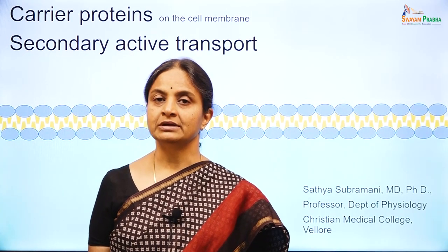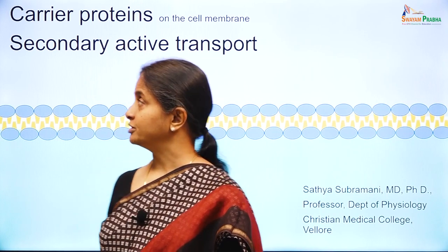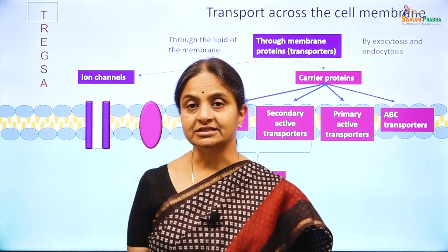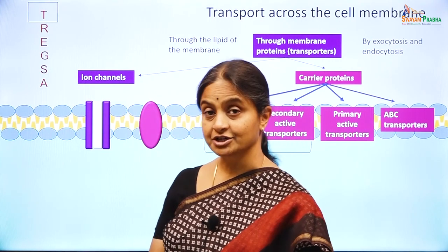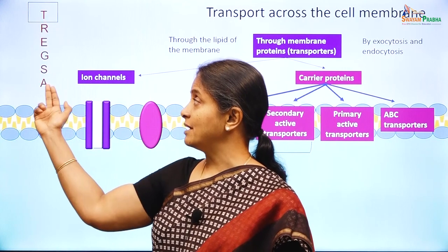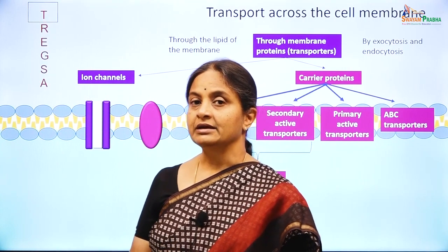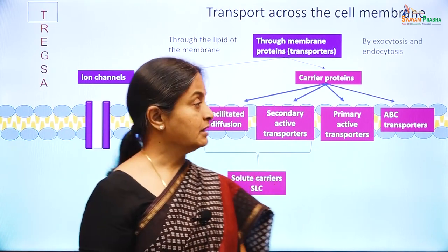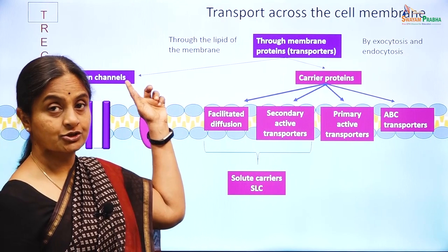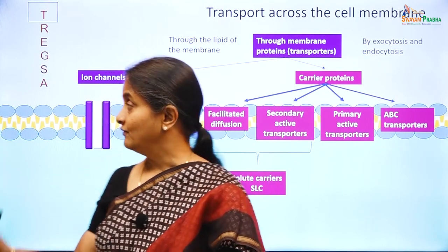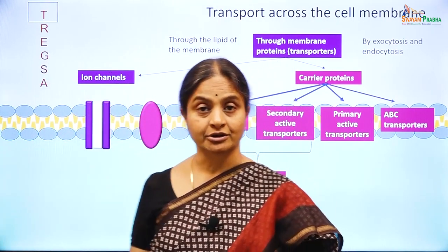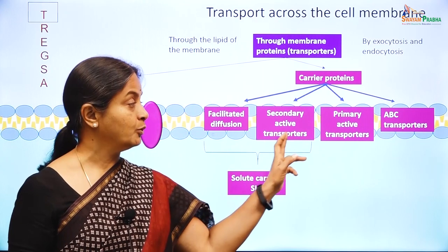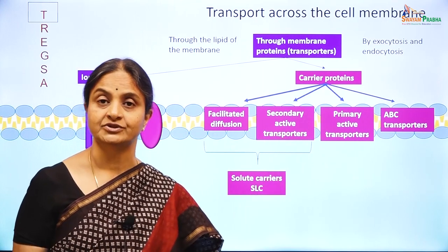The topic for discussion is secondary active transporters on the cell membrane. We have been considering proteins on the cell membrane in 6 functional classes. We started discussing transporters, broadly classified into ion channels and carrier proteins. Having completed discussion on ion channels and facilitated diffusion transporters, we are now moving over to secondary active transporters.